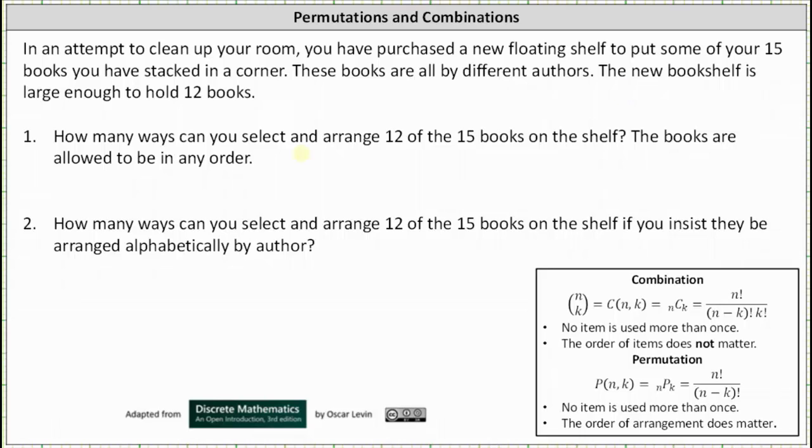Number one: How many ways can you select and arrange 12 of the 15 books on the shelf? The books are allowed to be in any order. So because the books are allowed to be in any order, the order matters, and therefore we will use a permutation to answer this question. For a permutation, no item is used more than once and the order of the arrangement does matter.